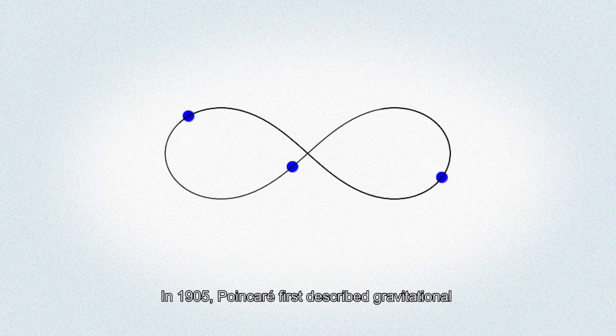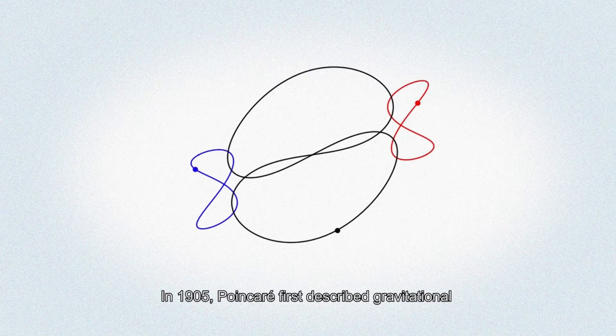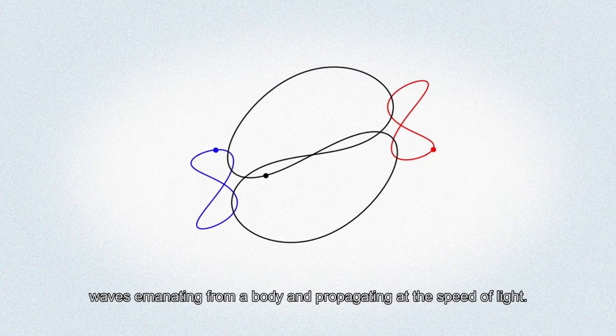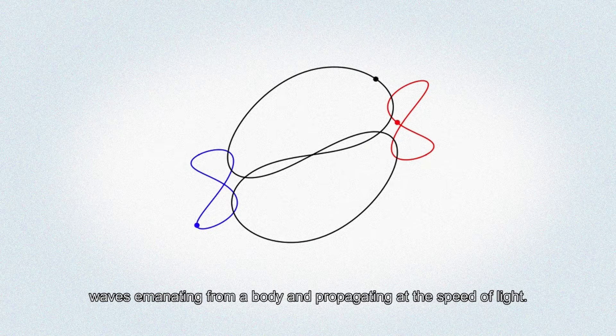In 1905, Poincaré first described gravitational waves emanating from a body and propagating at the speed of light.